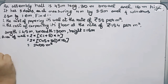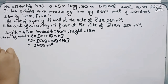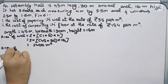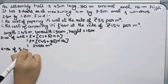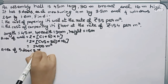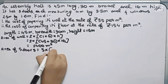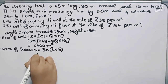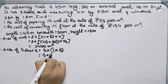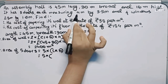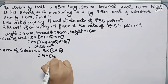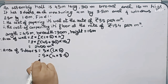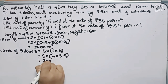Now I have to find the area of 5 doors. Therefore, area of 5 doors equals 5 into length into breadth, which is 5 into 4 meter into 3.5 meter. It becomes 70 meter square.